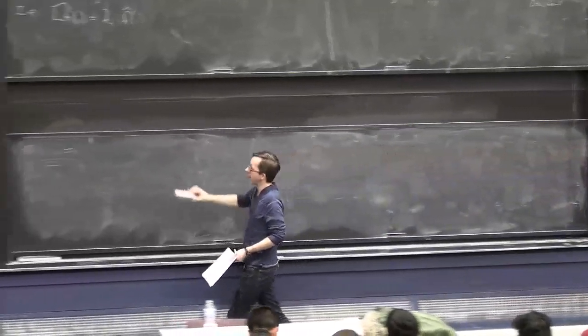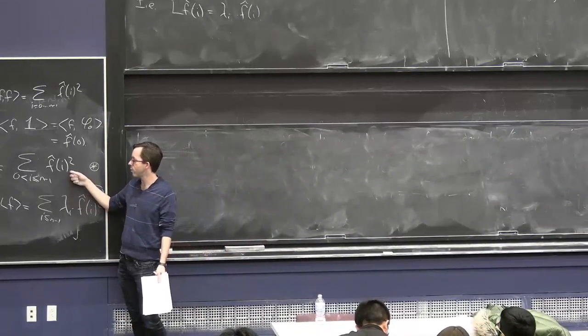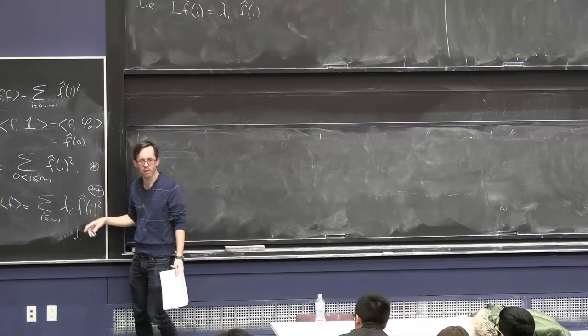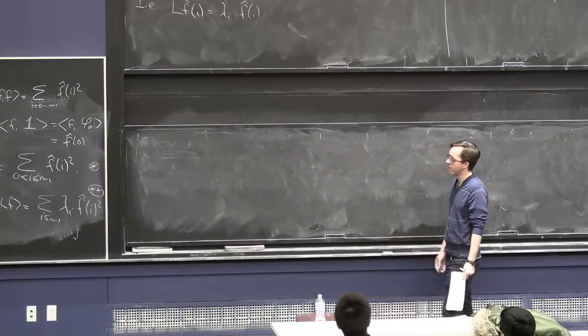And we observed that the conductance of a set, I'll remind you of the definitions in a bit, was the ratio of this to this when f is the indicator of the set. Or it's very close to that, with some small twists.